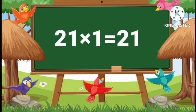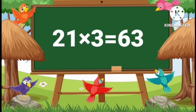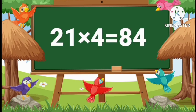21 ones are 21. 21 twos are 42. 21 threes are 63. 21 fours are 84.